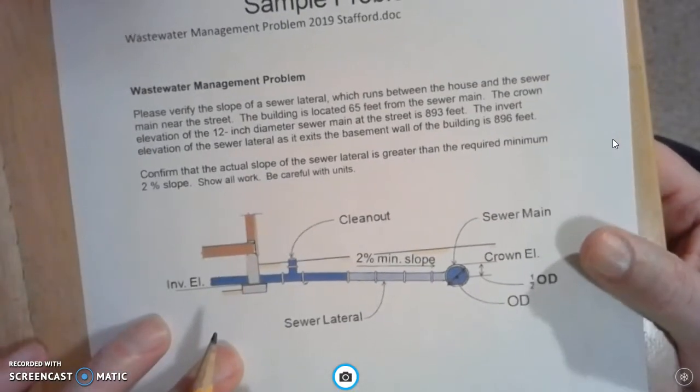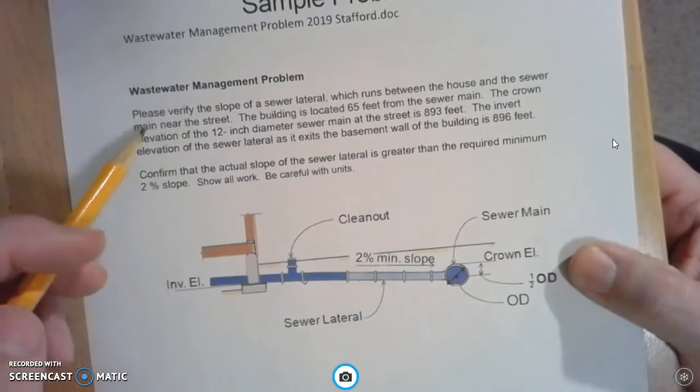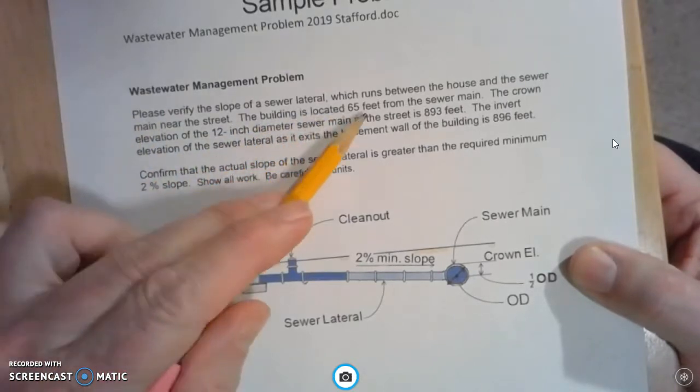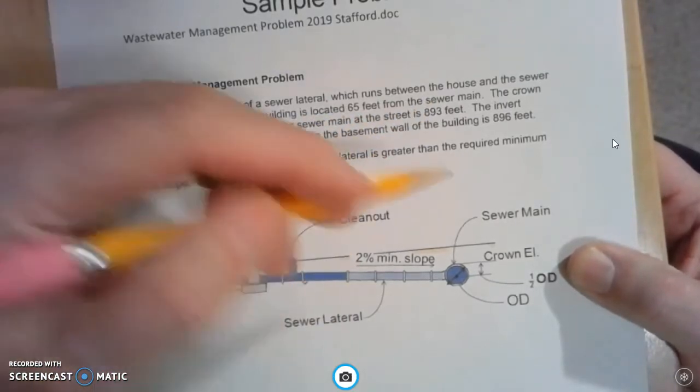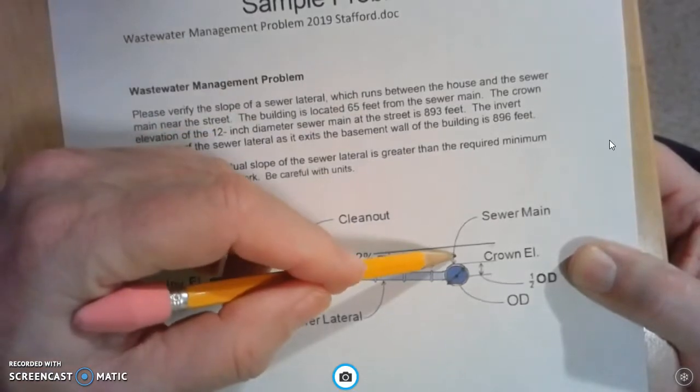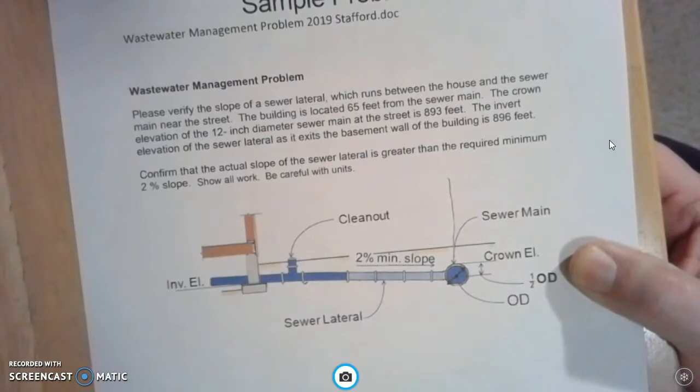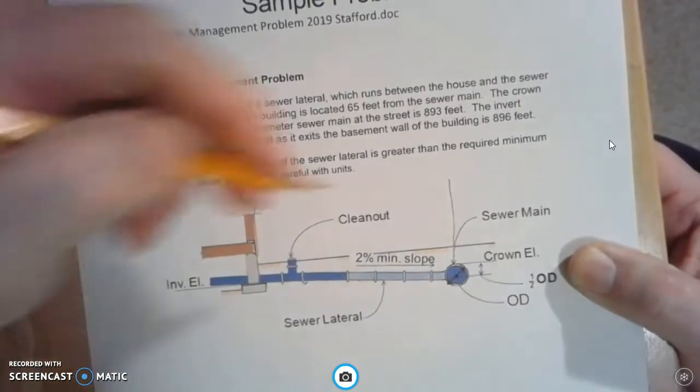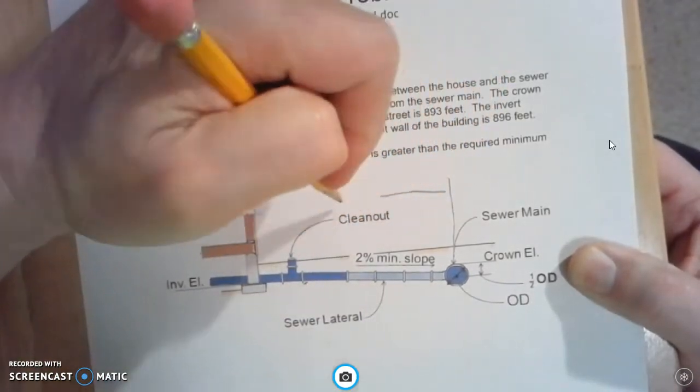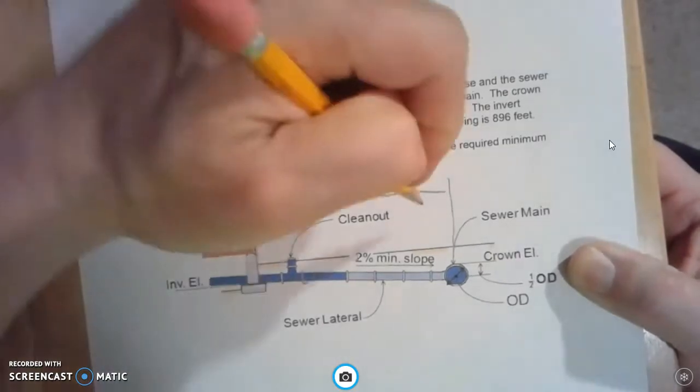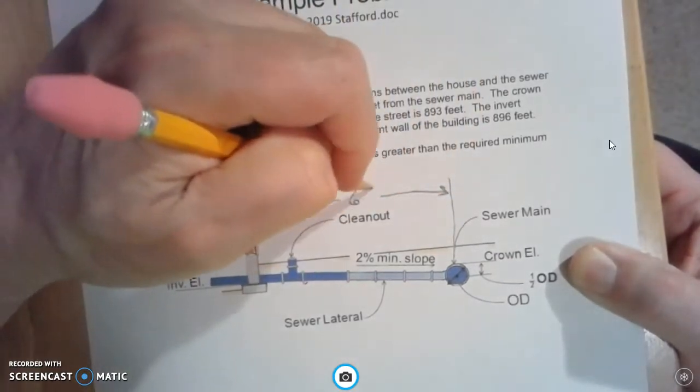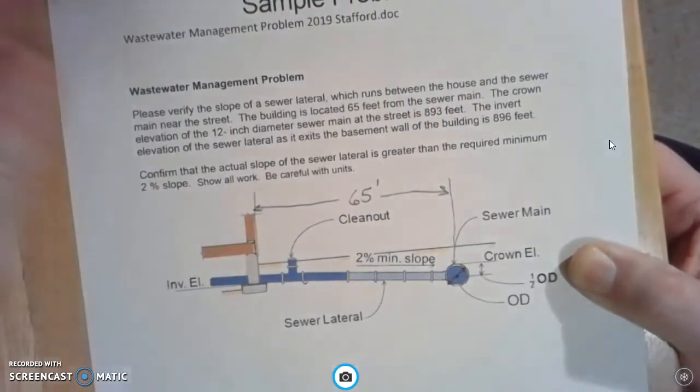The first thing it tells us is the building is located 65 feet from the sewer main. So the sewer main is the center of the main pipe right here to the house. I'm just going to put down 65 feet right here.